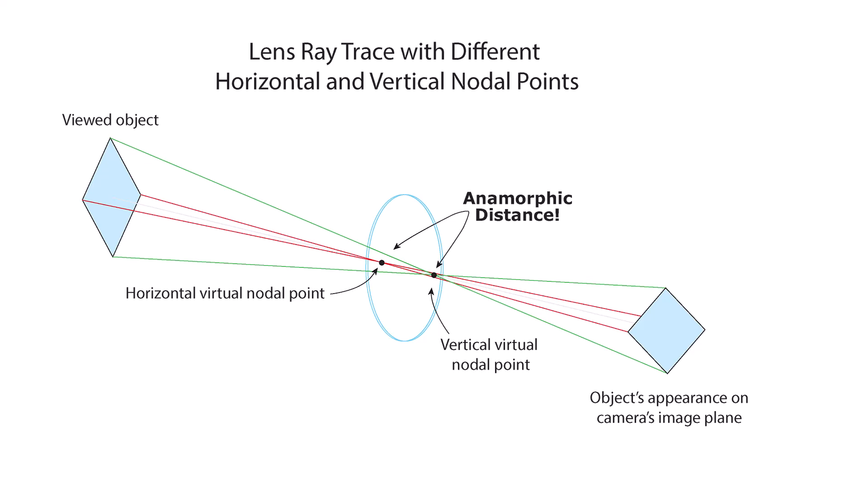This is a simplified drawing, of course. In reality, an anamorphic lens has multiple groups of multiple lenses, which can all shift around individually.